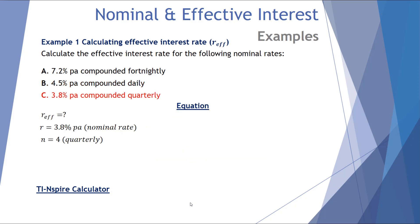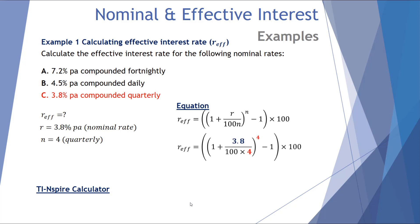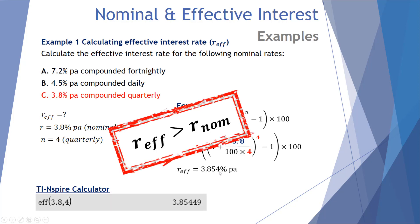Finally, 3.8% per annum compounded quarterly. Our nominal rate is 3.8 and N = 4 quarters per year. That gives an effective interest rate of 3.854% per annum — confirmed by the calculator. Once again, the effective interest rate of 3.85 is greater than the nominal of 3.8. If you're getting it the wrong way around, you've done something wrong — always check your answers.